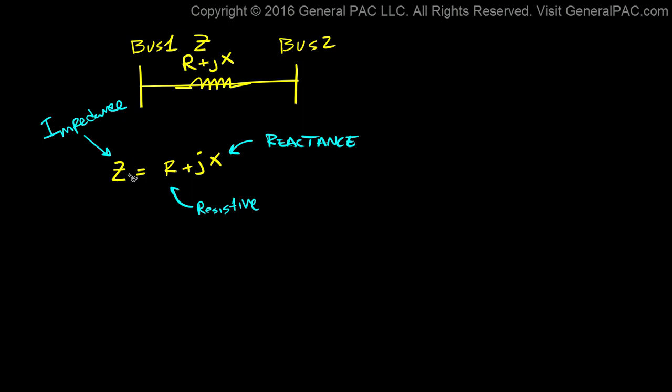So another way to describe impedance is a term called admittance. And admittance is essentially 1 over the impedance. So that's the admittance.